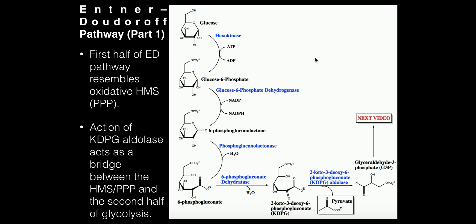The Entner-Doudoroff pathway is really just a mixture of two pathways. The first part is really just the oxidative hexose-monophosphate shunt, or the oxidative phase of the pentose phosphate pathway, which is used to produce NADPH from glucose. The last half of this pathway is just the last half of glycolysis. So it's kind of a mixture of the two pathways.